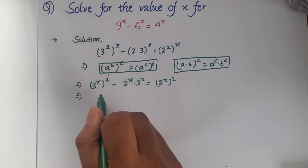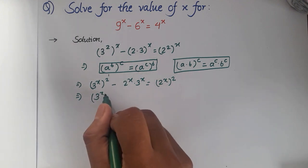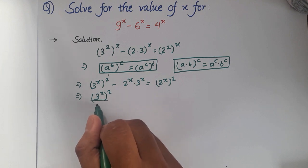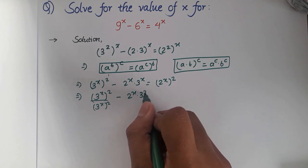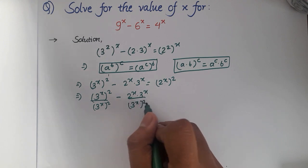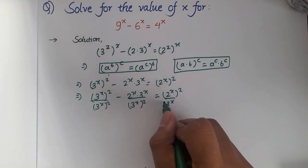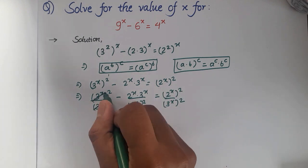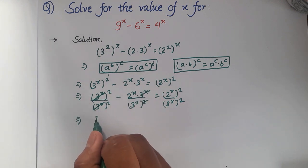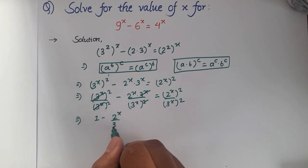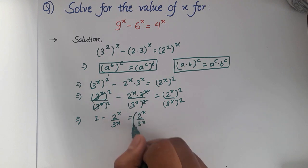Now let's divide this equation by 3 power x whole squared. Then this will give us: 3 power x whole squared over 3 power x whole squared, minus 2 power x multiplied by 3 power x over 3 power x whole squared, is equal to 2 power x squared over 3 power x squared. This and this will cancel out; 3 power x and 3 power x will cancel out, giving us 1 minus 2 power x over 3 power x, equals 2 power x over 3 power x, whole squared.